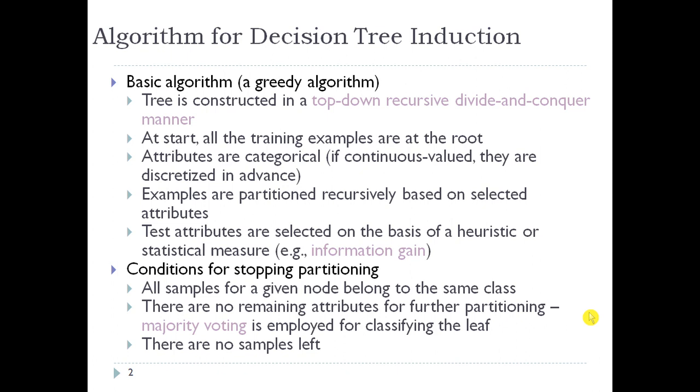Test attributes are selected on the basis of a heuristic or statistical measure, for example, information gain, which is an attribute selection method. Two other methods are Gini index and gain ratio. I have already explained information gain.